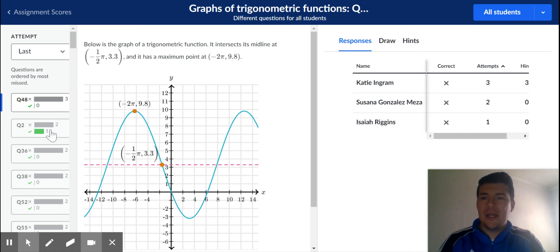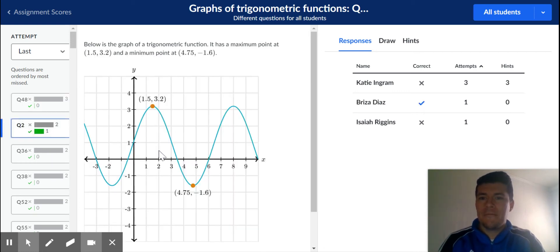Looking at another example, this one has just decimals. Now, this X value is 1.5. This X value is 4.75. So those values are 3 units, 3.25 units apart.